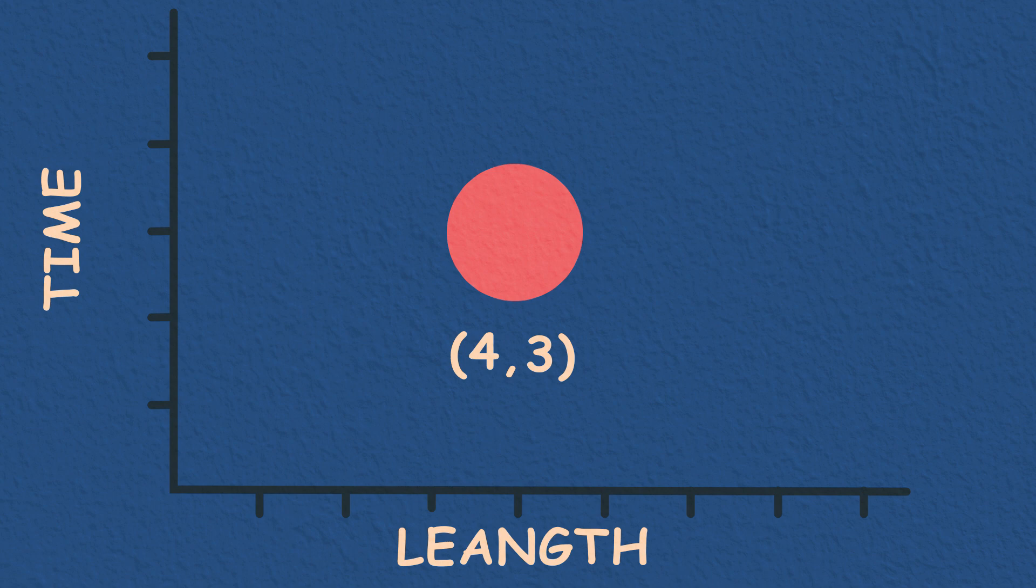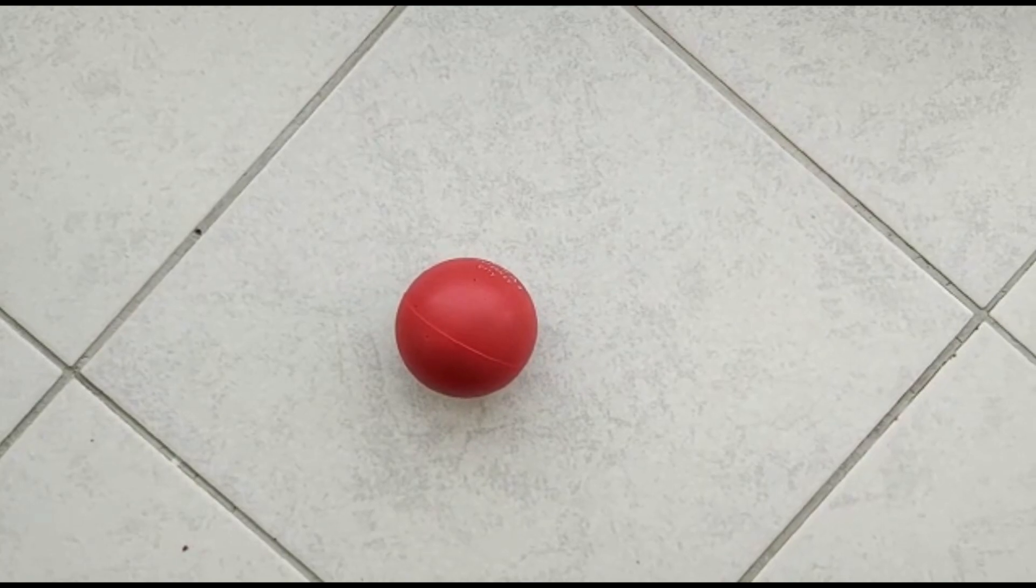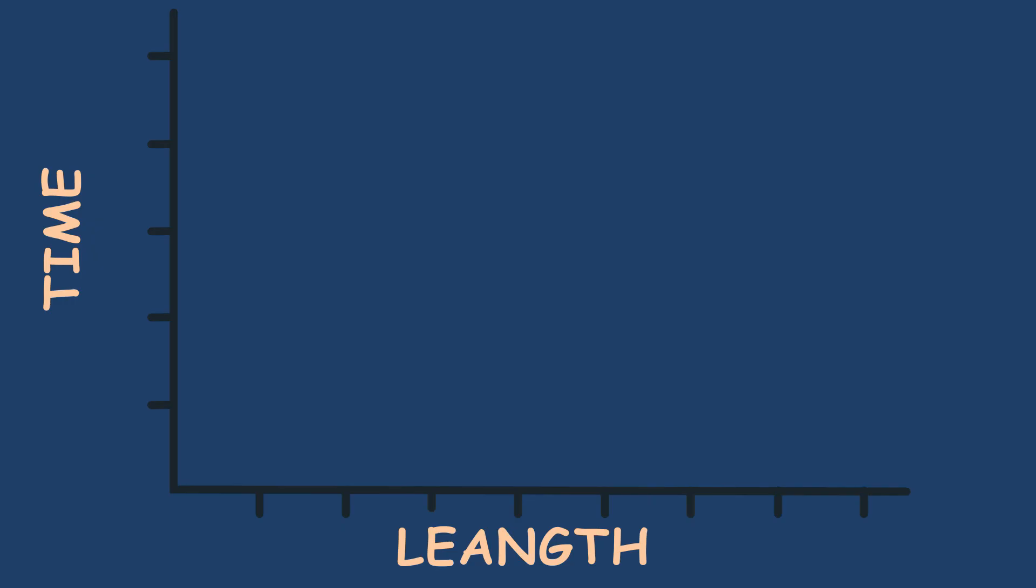One thing to remember is that you're always traveling through time. A stationary ball might not be moving through space, but is always traveling through time into the future. Let's represent this stationary ball on the space-time diagram. The ball is at x equals 3 at 2 pm and is also at x equals 3 at 3 pm and also at 4 pm.